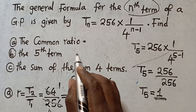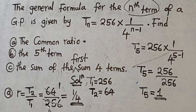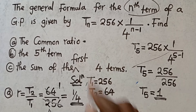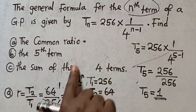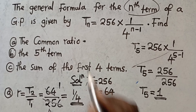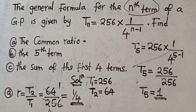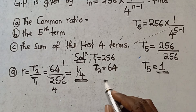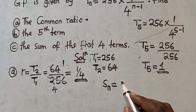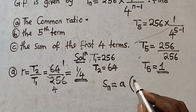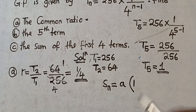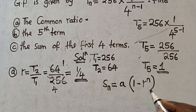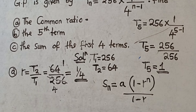Moving to the next part: finding the sum of the first four terms. The formula I will use is: the sum of n terms equals a times (1 minus r to the power n) divided by (1 minus r). I use this version because the common ratio is less than 1.